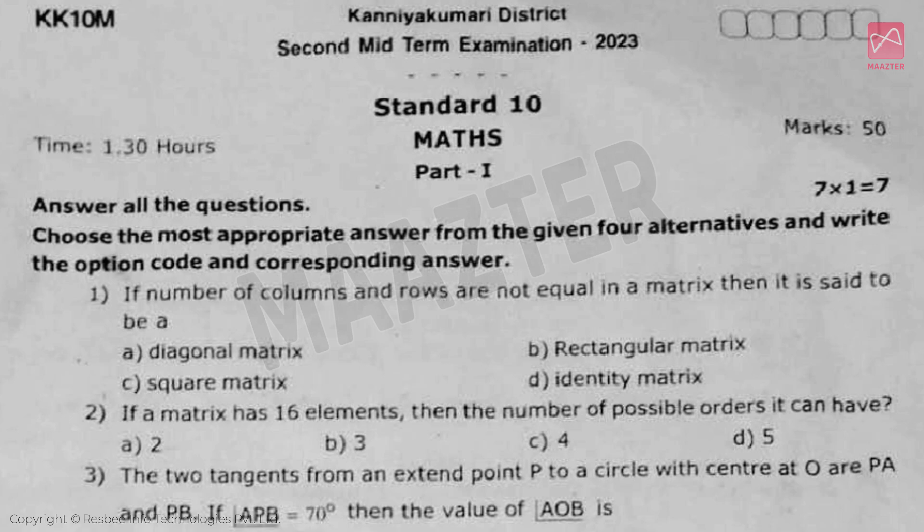First, if number of columns and rows are not equal in a matrix, then it's said to be a, answer is option B.